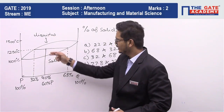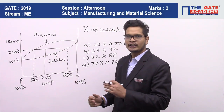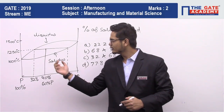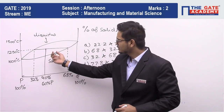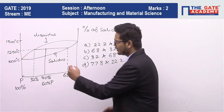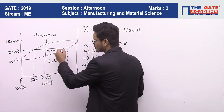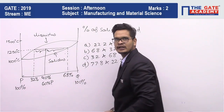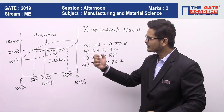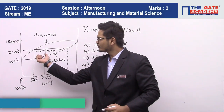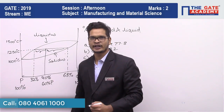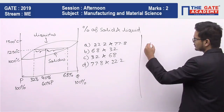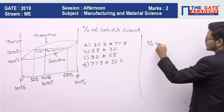Here we have a liquidus line and here we have a solidus line. In the lever rule, if you want to find the percentage of solid, we have to take the opposite side. For example, this side is in contact with the solidus line and this side is in contact with the liquidus line. So for finding the percentage of solid, we have to take the side which is in contact with the liquidus line.